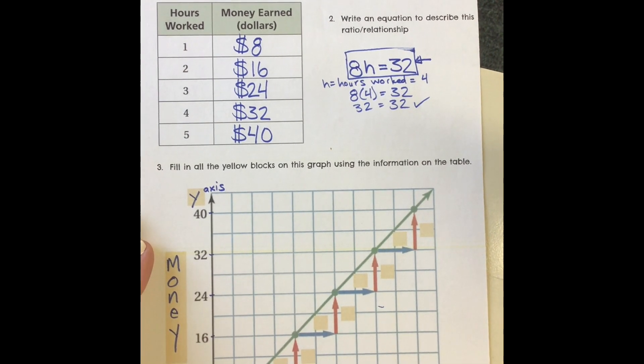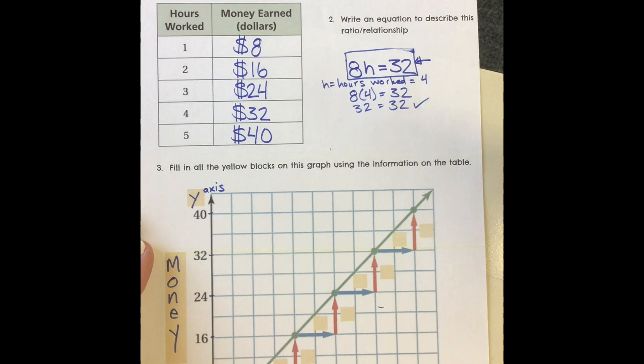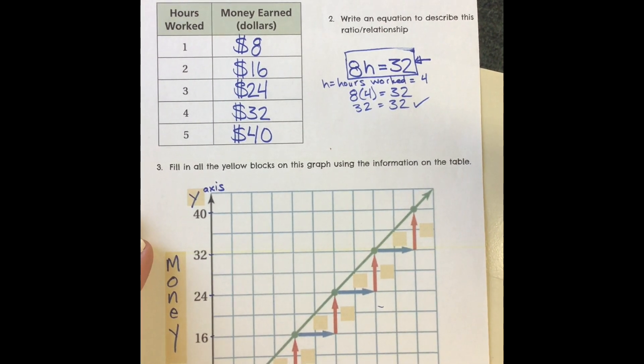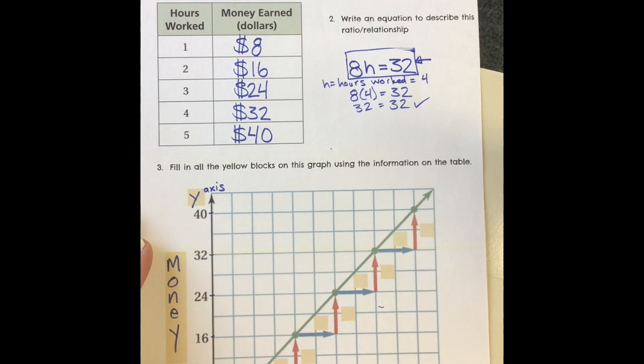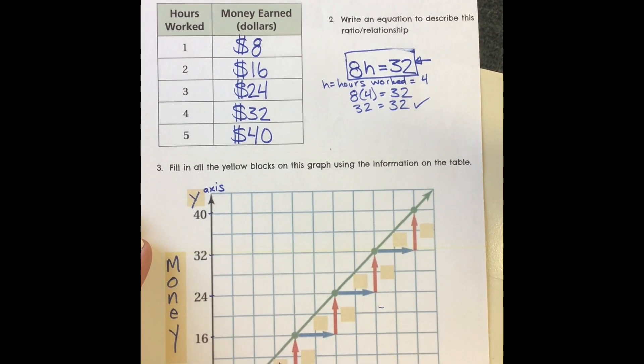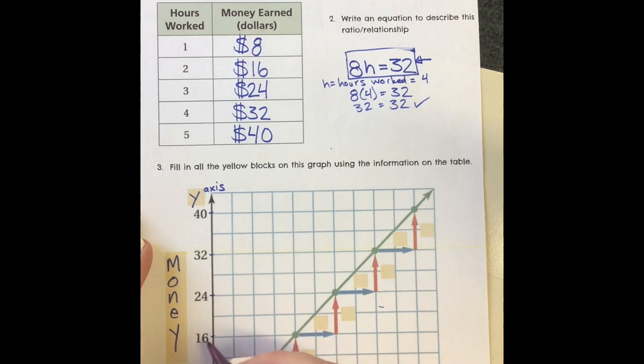Now I want to look at something here. If we take the time to notice, every time we went across, we went across by 1. The amount of money we got every time we worked 1 hour was $8. Each time, it was 1 hour and 8 more dollars.